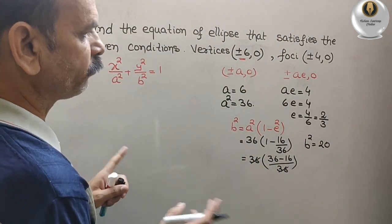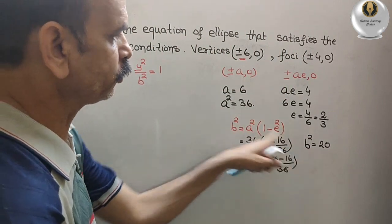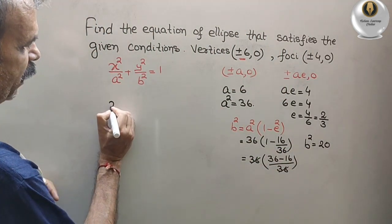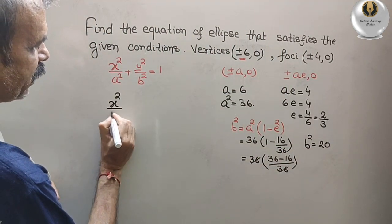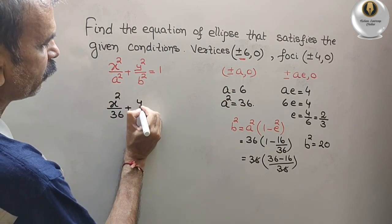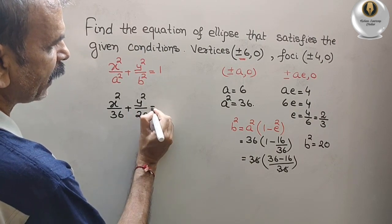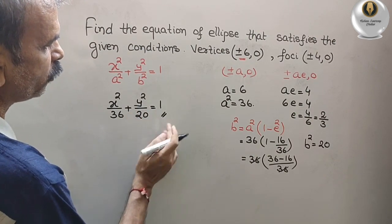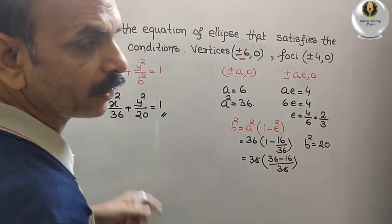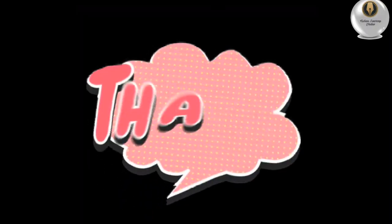Now, substitute both values a square and b square here. So you will get x square by 36 plus y square by 20. That is equal to 1. So this is your equation of an ellipse. Thank you.